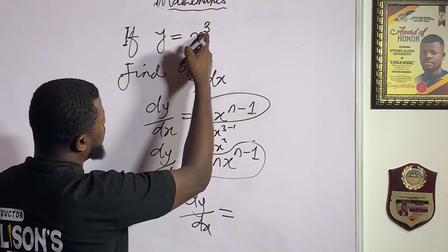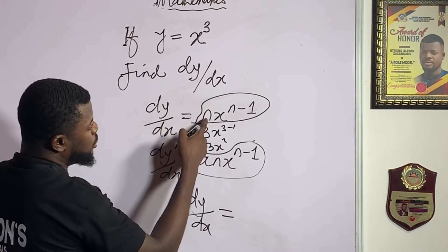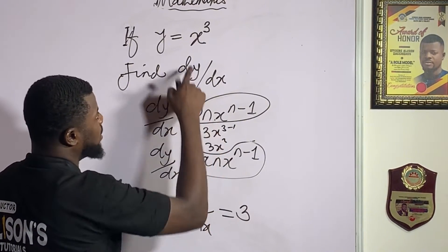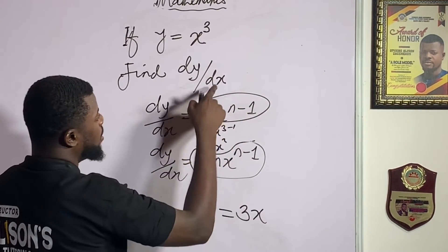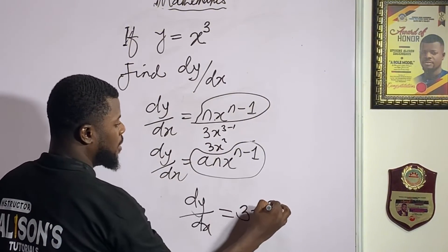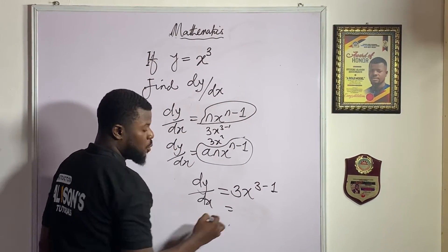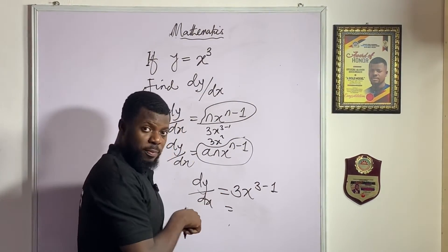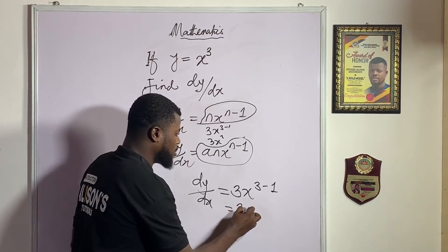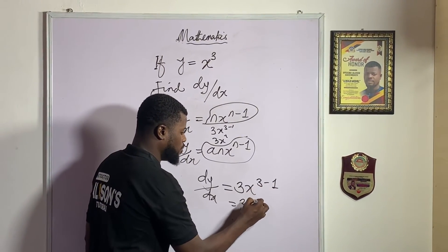And the result will be, let's plug the power which is this three into wherever we see n. So we have three, x is the same thing with x, so we have here to be three again minus one. And what is the result? Put it in the comment section. So three x will be three minus one and that will be two.